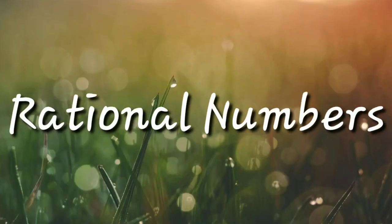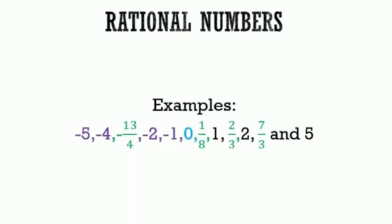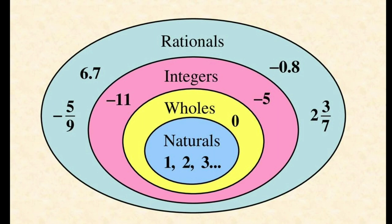The next category is rational numbers. What are rational numbers? Any number which can be put in the form of p by q, where p and q are integers and q is not equal to 0, is called a rational number. It means numbers which can be written in the form of fractions are considered as rational numbers. For example, minus 5, minus 4, minus 13 by 4, minus 2, minus 1, 0, and so on are examples of rational numbers. All the natural numbers, whole numbers, and integers are considered as rational numbers, and rational numbers can also be written in the form of decimals.